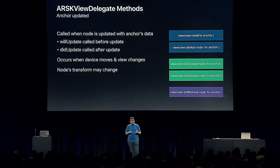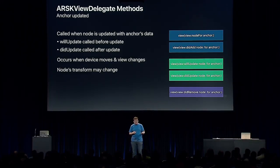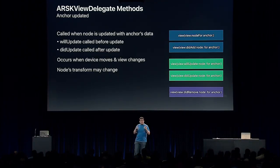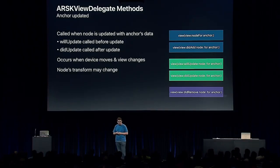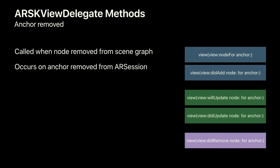Next, willUpdateNodeForAnchor and didUpdateNodeForAnchor are called before and after the node is updated with a given anchor's data. This occurs when the device moves and the view changes — the node's position, rotation, and scale may change between calls to these methods. Finally, didRemoveNodeForAnchor is called when the node is removed from the scene graph, which occurs when its corresponding anchor is removed from the AR session.